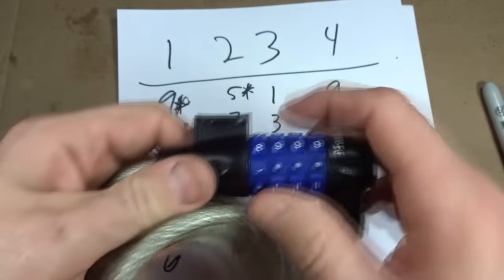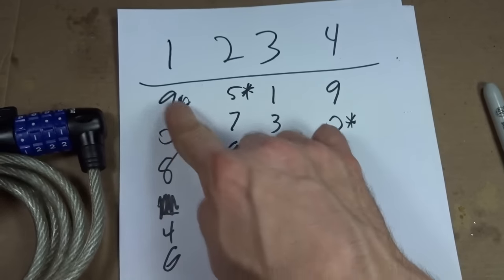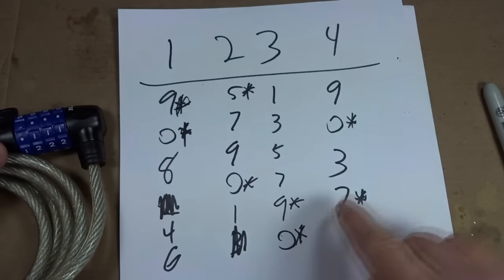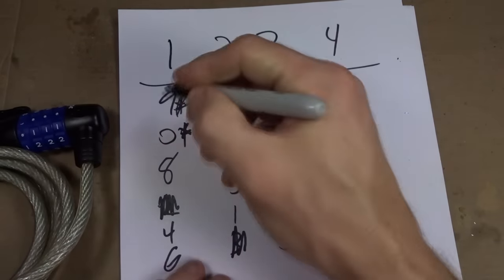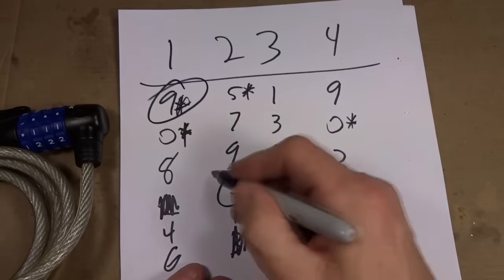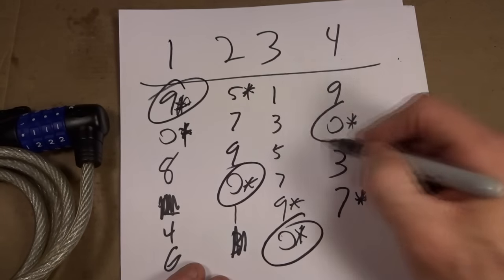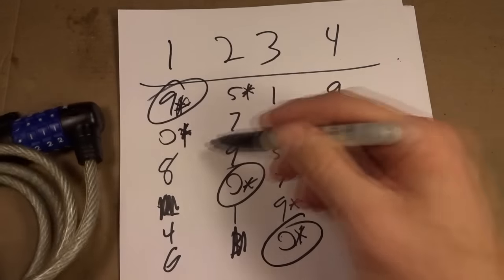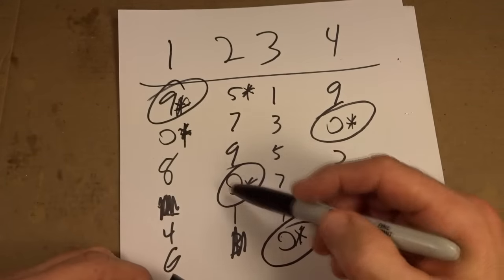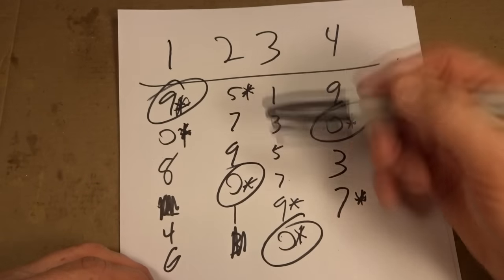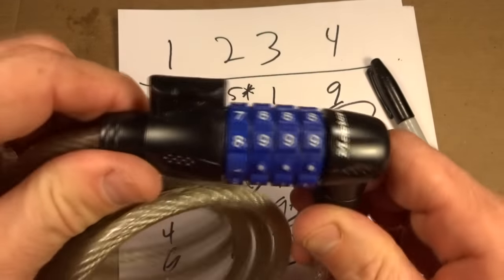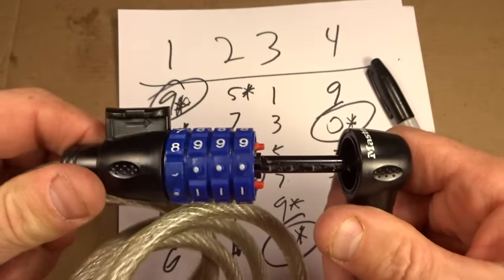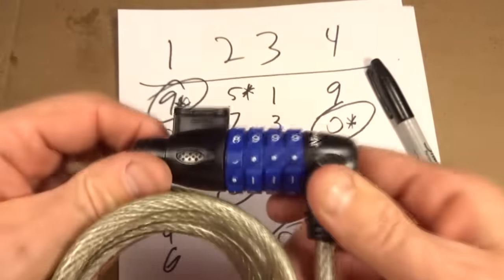So the combination is nine, zero, zero, zero. So basically nine, zero, zero, zero. So just by finding those catch points, finding the ones where it catches the most and trying those. And if that doesn't open it, then you can go on and start trying some of these other ones and going off and trying various permutations of that until you finally find the combination of the lock.